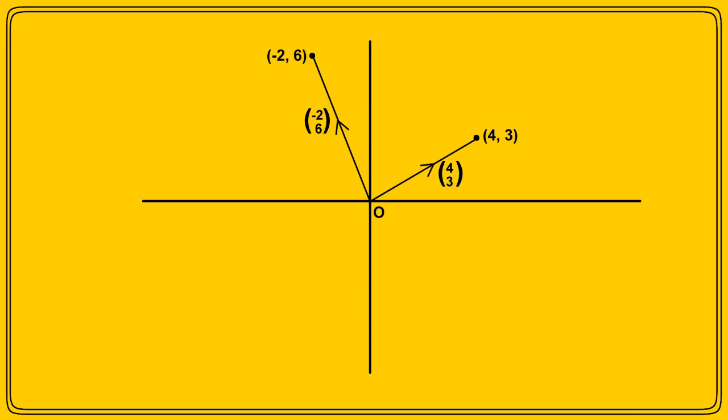Again, it's important not to mix up the vectors with the coordinates, even though they may have the same numbers in them. This special vector that starts at the origin is called the position vector of the point. The coordinates give the position of a point, whereas the position vector gives the journey, if you like to think of it that way, to the point from the origin.